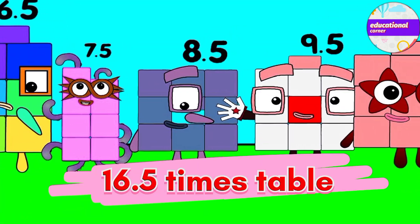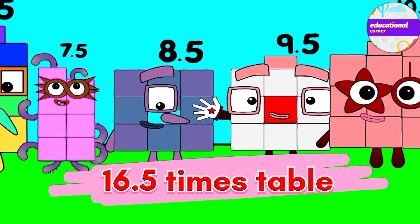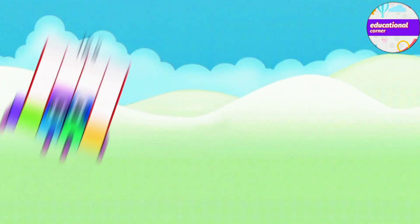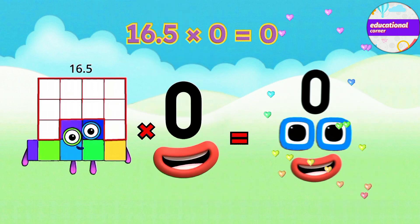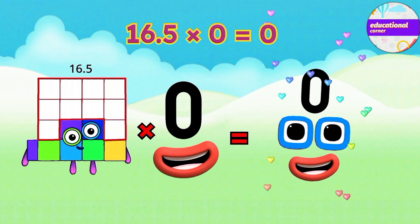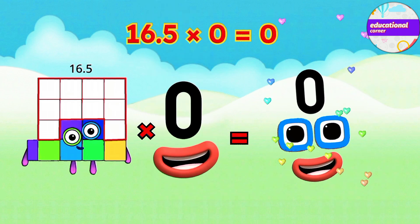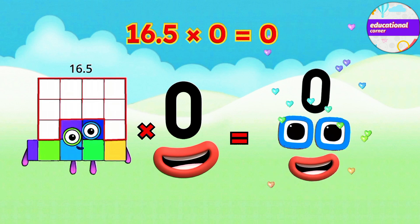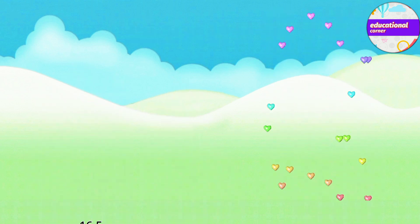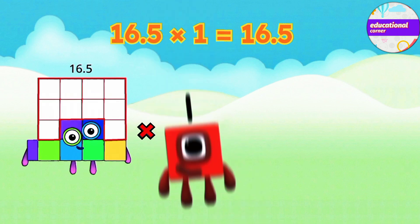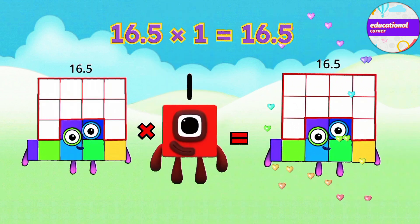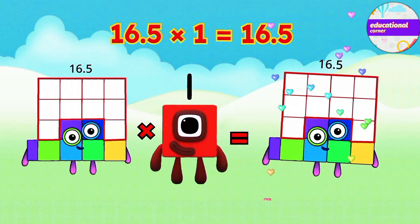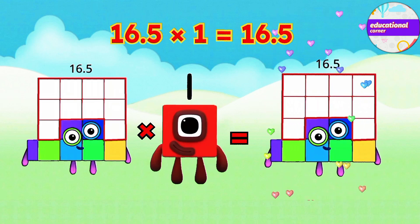16.5 times table. 16.5 multiplied by 0 equals 0. 16.5 multiplied by 1 equals 16.5.